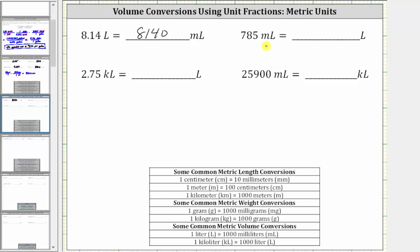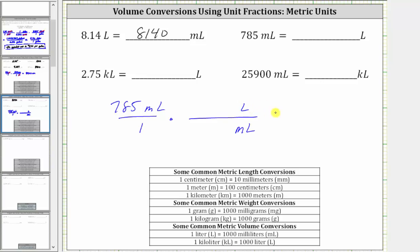Next we want to convert 785 milliliters to liters. We begin by writing 785 milliliters as a fraction with the denominator of one. To perform the conversion, we use the same conversion as last time, that one liter is equal to 1,000 milliliters. But now we want milliliters to simplify out, and therefore we have to have milliliters in the denominator of the unit fraction and liters in the numerator. Since one liter is equal to 1,000 milliliters, the unit fraction is one liter over 1,000 milliliters.